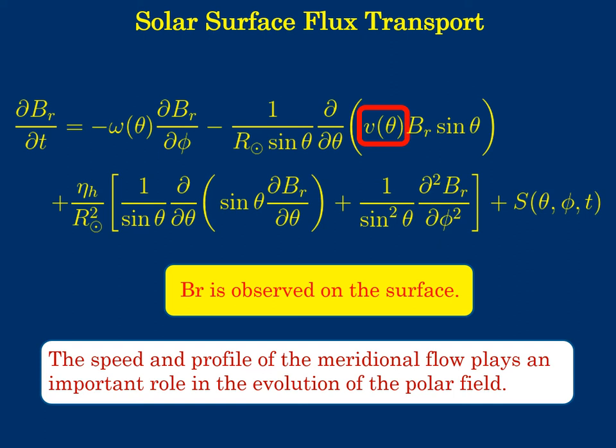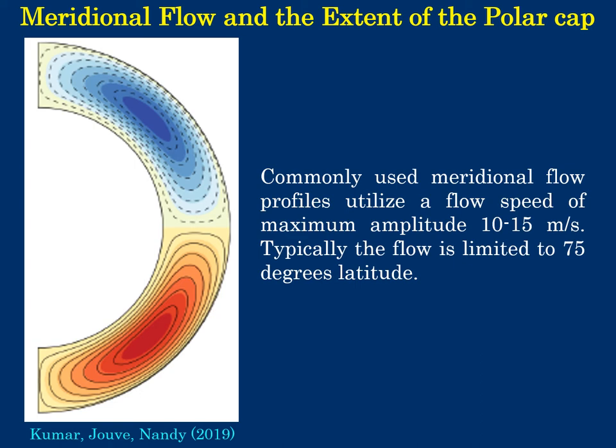Constraints on the speed of the meridional flow and the latitudinal extent to which it reaches the poles are outstanding questions. Answers to these would help us figure out the extent of the polar cap that is built up at the minimum of a cycle and how flux cancellation proceeds at the boundary of this polar cap. Commonly used meridional flow profiles utilize a flow speed of maximum amplitude around 10 to 15 meters per second, and typically this flow is limited to 75 degrees latitude.